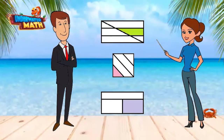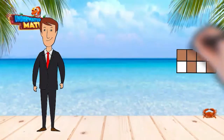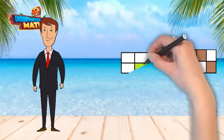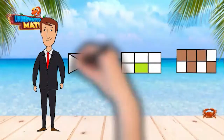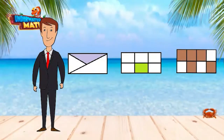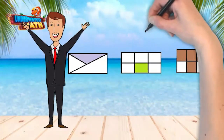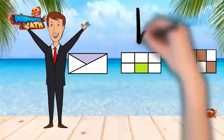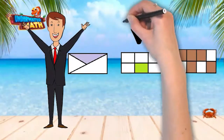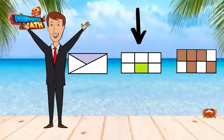Try it out — which one of these models shows a unit fraction? That's right! The green model shows a unit fraction because it is split into equal parts and one part is shaded in. The purple model is not cut into equal parts, and the brown model has more than one piece shaded in.